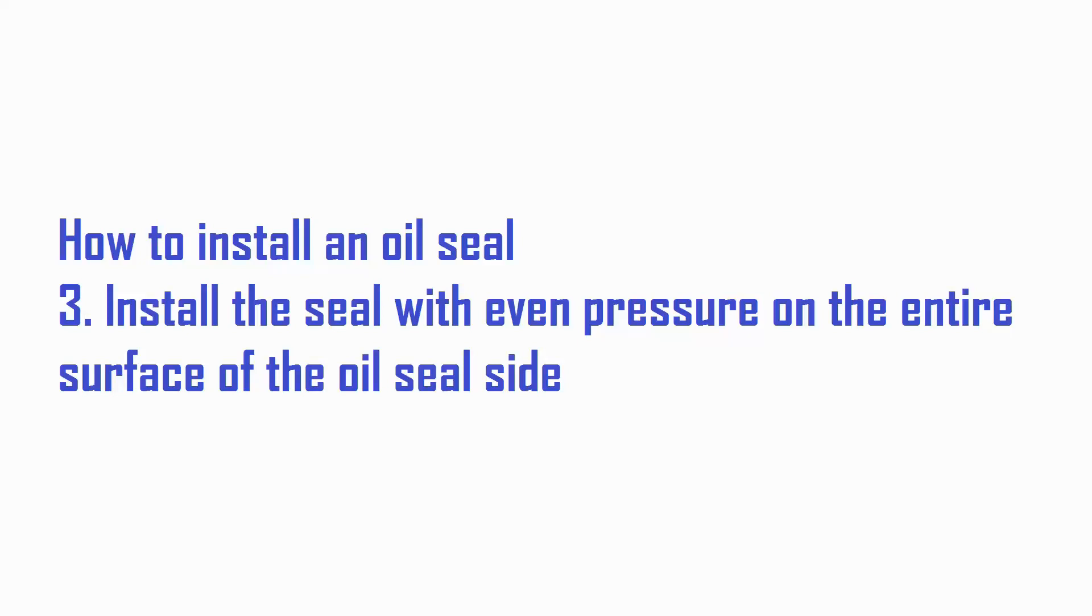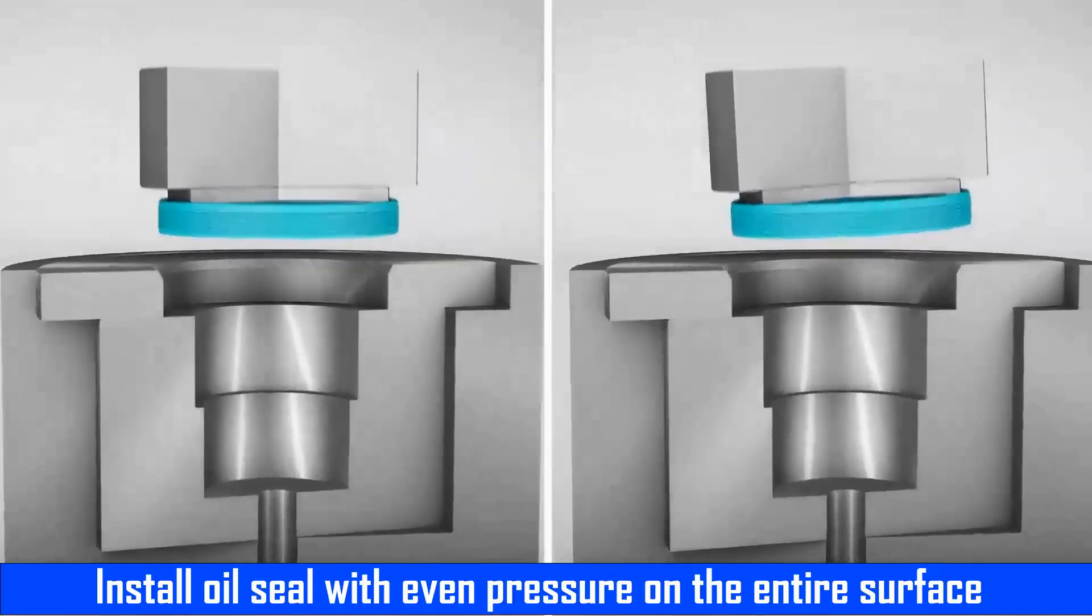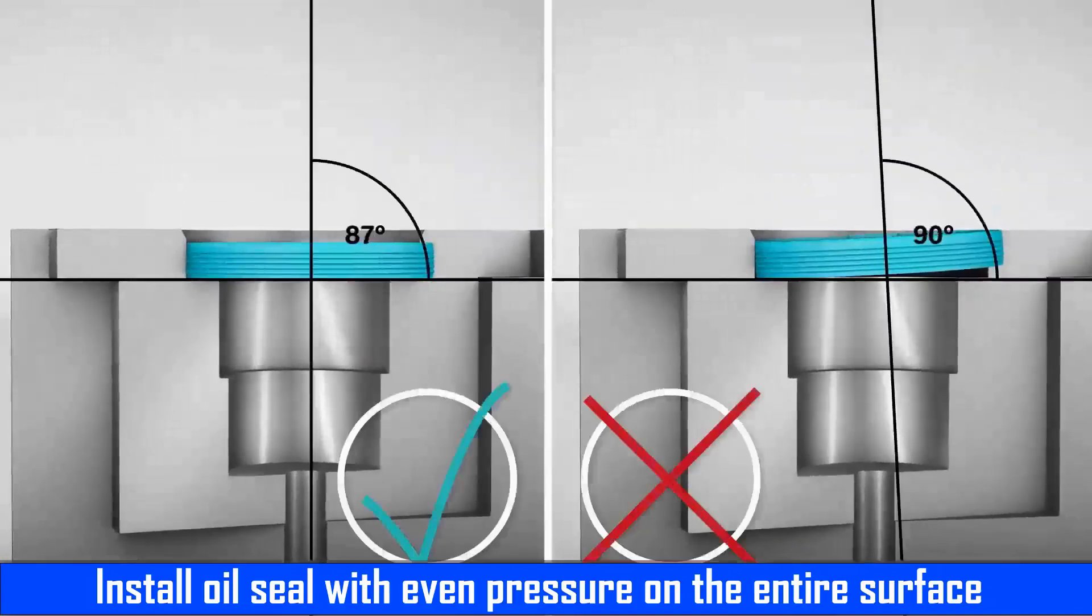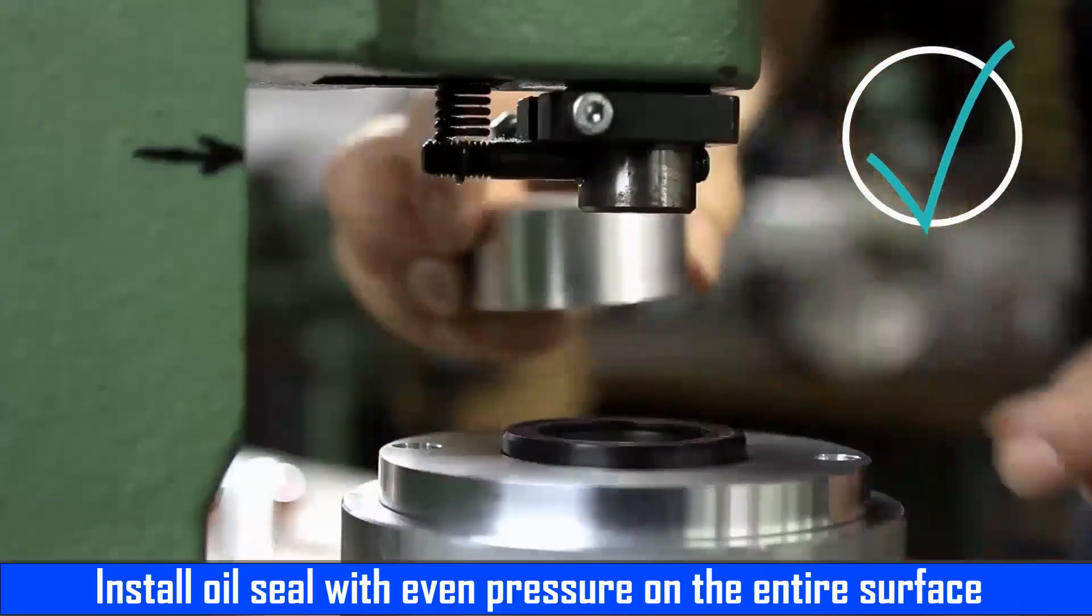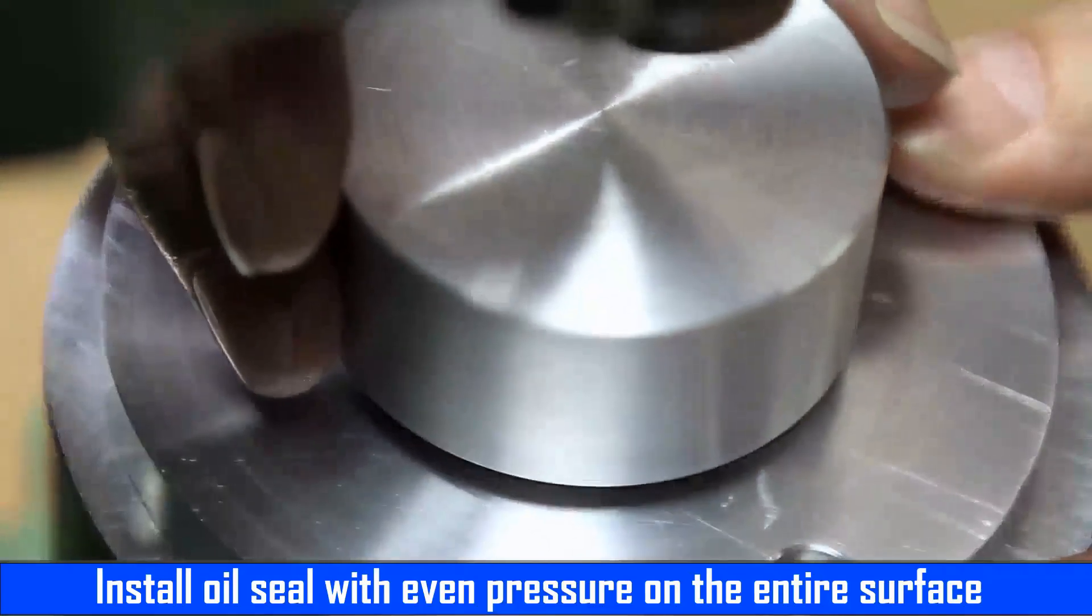Install the seal with even pressure on the entire surface of the oil seal side. Make sure the oil seal is installed perpendicular to 90 degrees to the axis of the shaft. If available, install the seal using a special press machine.